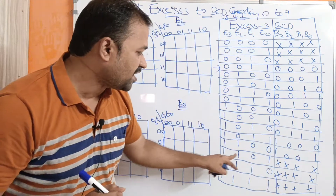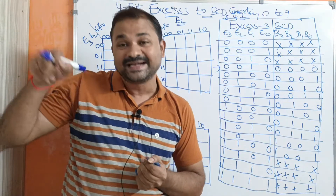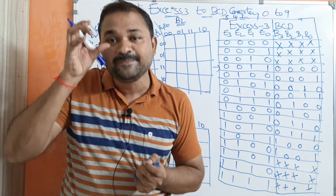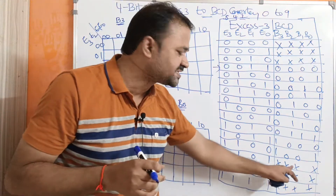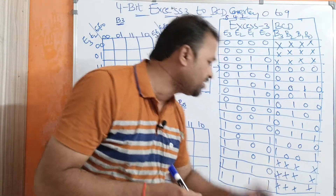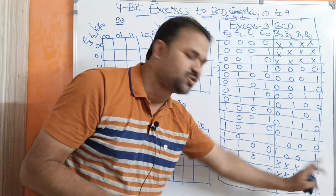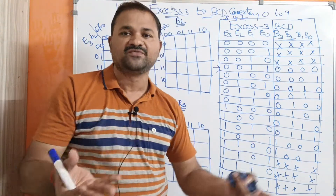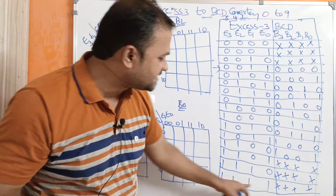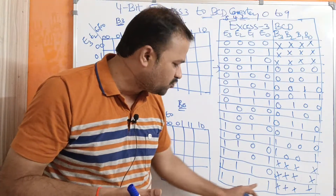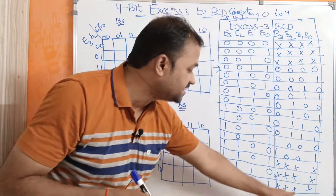Let us take 1101, which is 13. 13 minus 3 means 10, but 10 is not a BCD code — we have 10 BCD codes from 0 to 9. So that is why we use don't care. For 1110, that is 14: 14 minus 3 means 11, which is not a BCD code, so the output is don't care. The last combination is 15: 15 minus 3 means 12, and 12 is not a BCD code, so we use don't care.